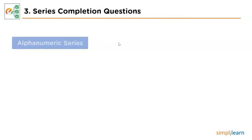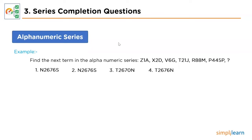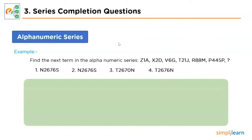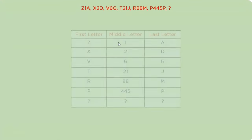Moving forward, we'll look into the alphanumeric series problem. The sequence goes: Z1A, X2D, V6G, T21J, R88M, and P445P. We'll take this sequence on our workspace and break each term into three parts arranged in tabular format. Let's first figure out the logic behind the starting characters.